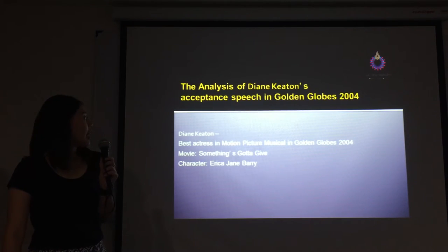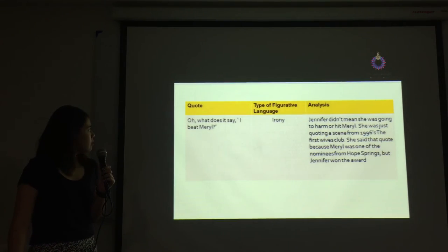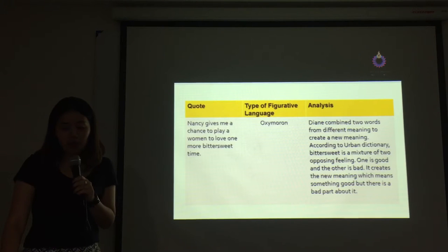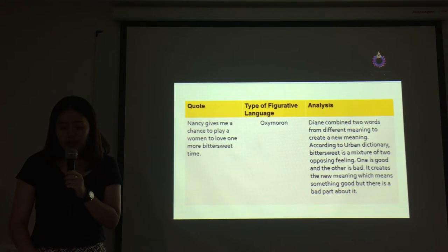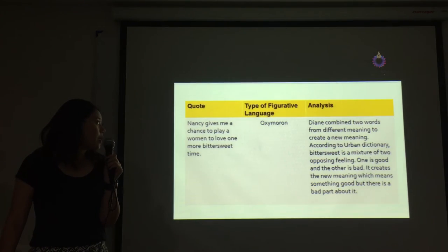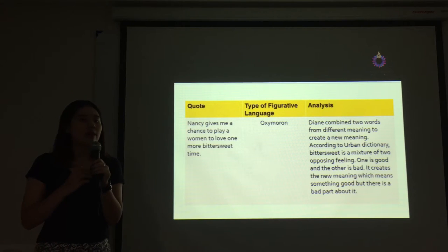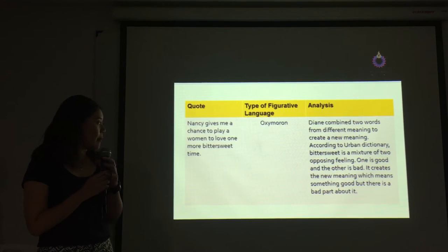Next, the analysis of Diane Keaton's acceptance speech at the Golden Globe 2004 for Something's Gotta Give. She said, 'Nancy gives me a chance to play a woman to love one more bittersweet time.' The figurative language used is oxymoron. Diane combines two words of different meanings to create a new meaning. According to the Urban Dictionary, bittersweet is a mixture of two opposing feelings — one good and one bad — creating a new meaning of something good but with a bad part about it.